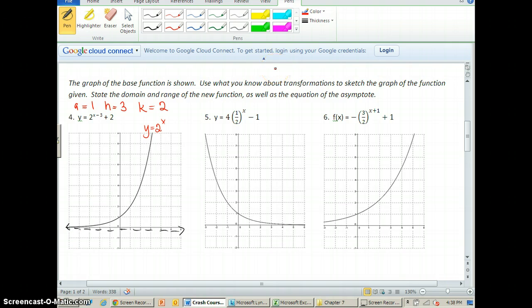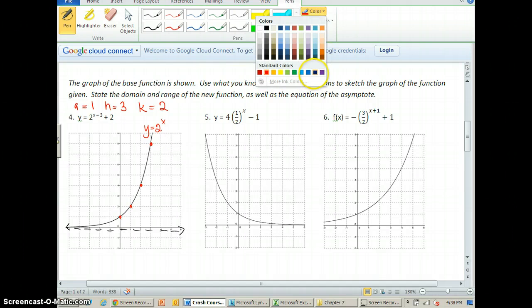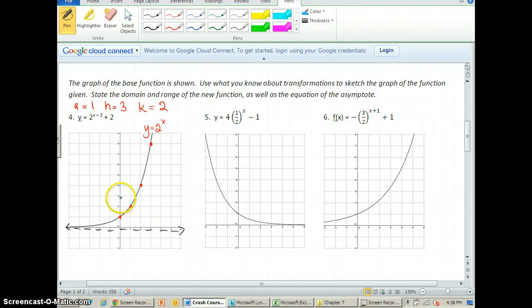So what I would suggest that you do is pick out some nice points on the graph, ones where it crosses at good, even spots that you can count. I think these 3 right here are going to be the best ones to move. This one's going to be too tall. So I'm going to take those points that are in red. Let me pick a different one. Let's say blue. And I'm going to take all of those points and move them over 3 and up 2.